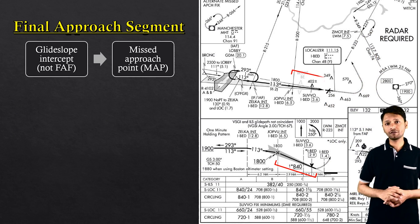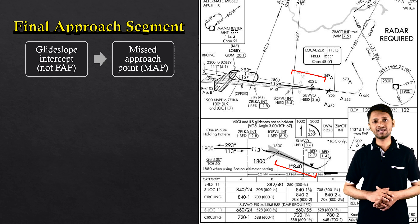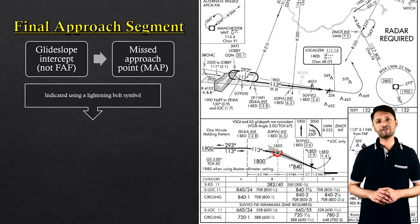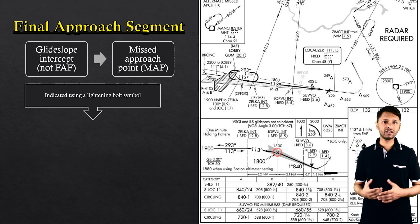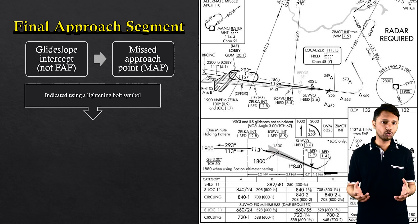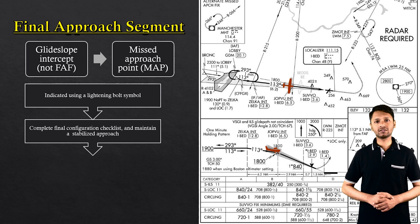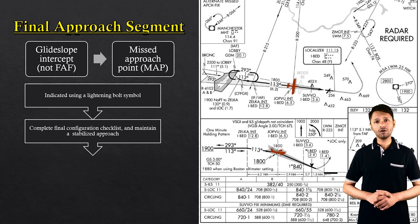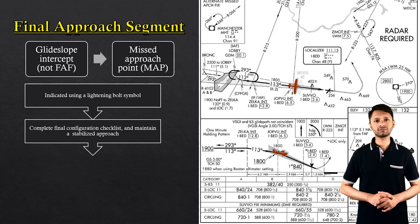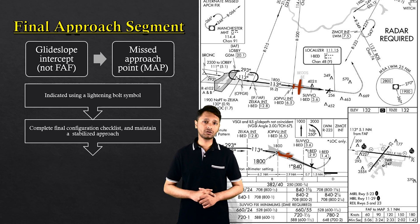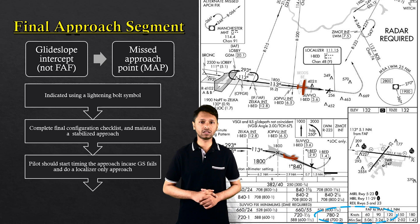The final approach segment of a precision approach begins from the interception of the glide slope, indicated with the lightning bolt symbol, and not the final approach fix indicated by the Maltese cross symbol. Though in our case, the lightning bolt falls on the same point, which may not always be true. At this point, the pilot completes the final configuration checklist and must maintain a stabilized approach by making small corrections to stay on the localizer and glide slope. In our example, the pilot begins to track the glide slope at ZELTA at 1,800 feet and continues down to the runway once established on the localizer.